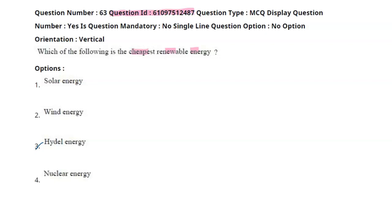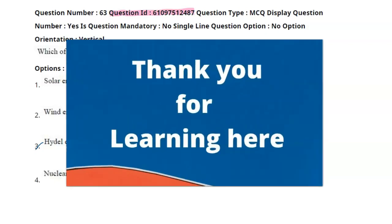So because of that, to produce the energy, hydro energy is the cheapest energy. It costs nearly 1 dollar per 1 kilowatt hour. Thank you.